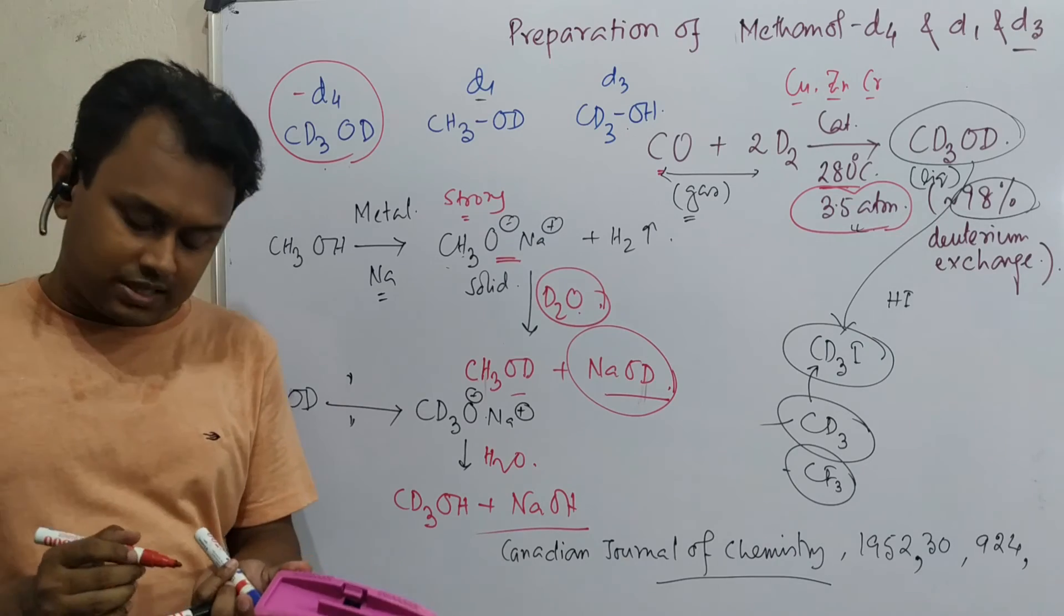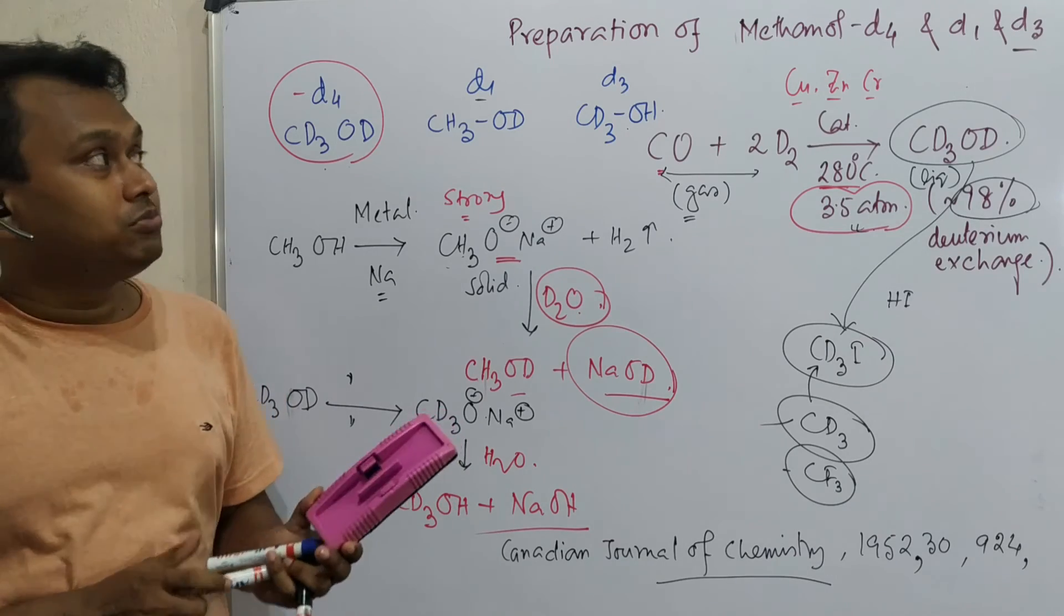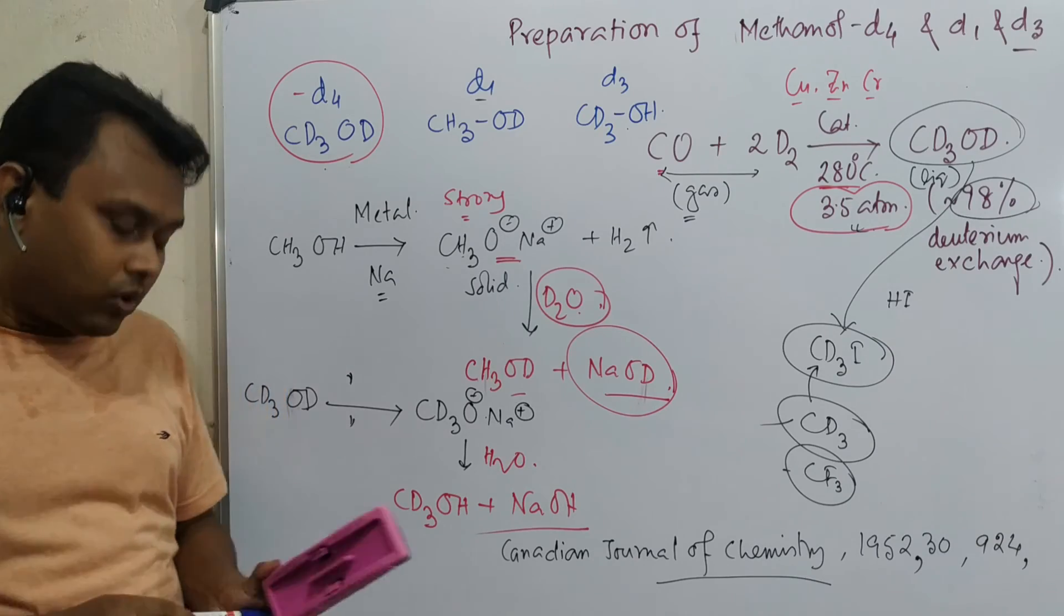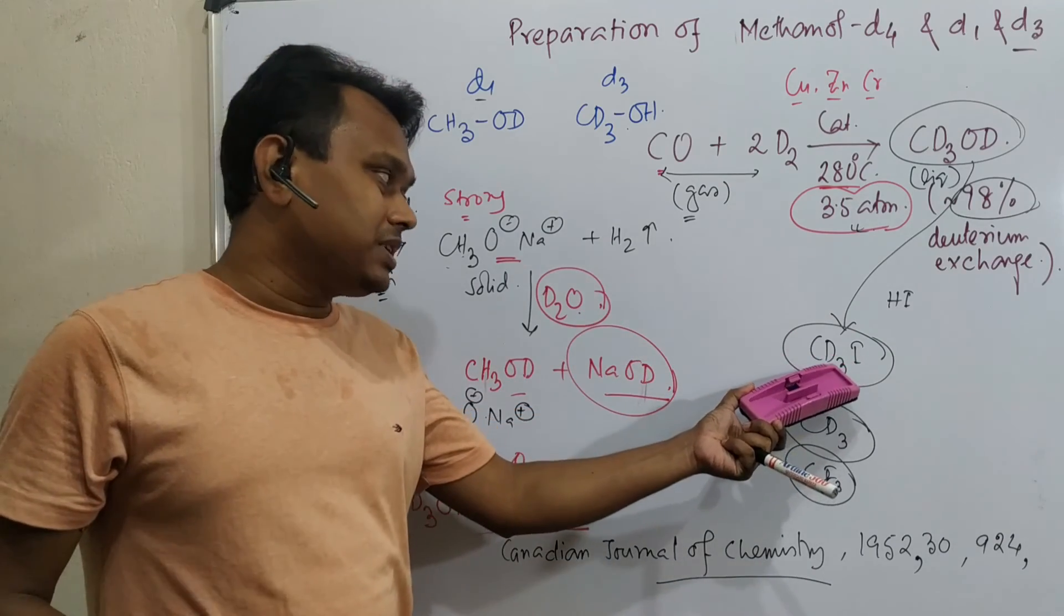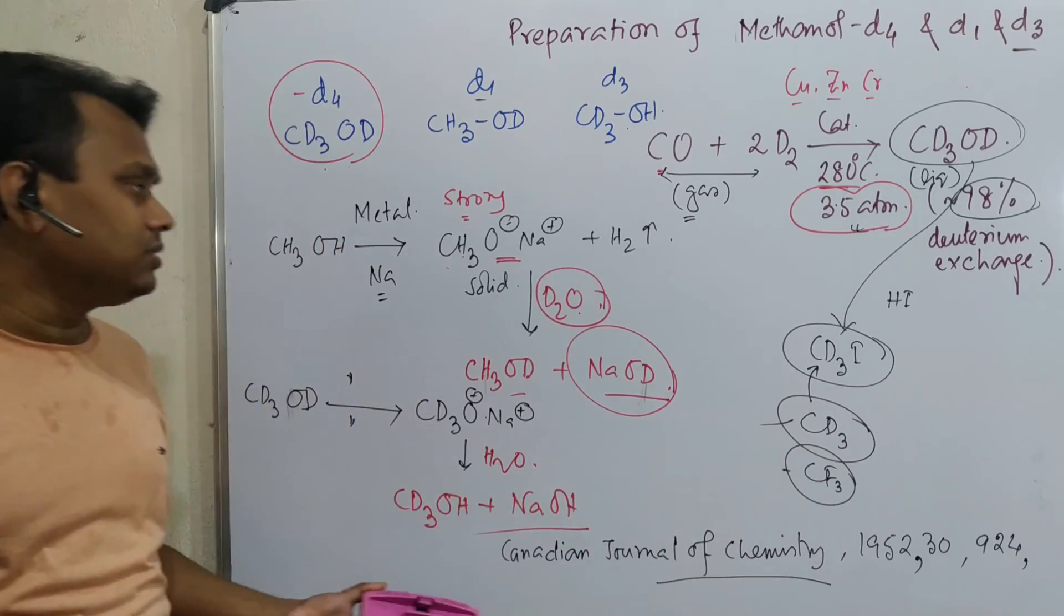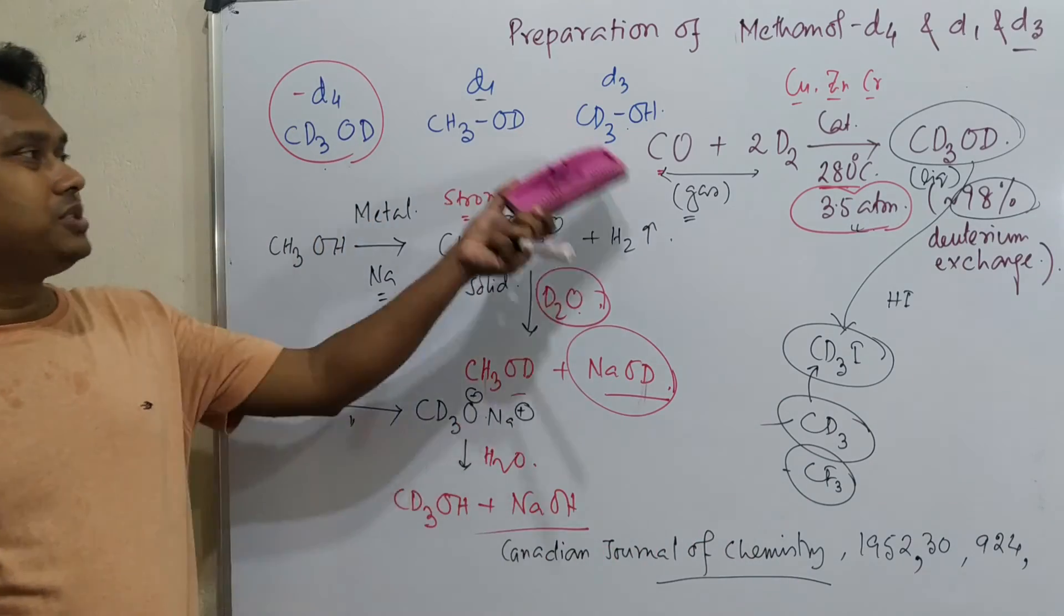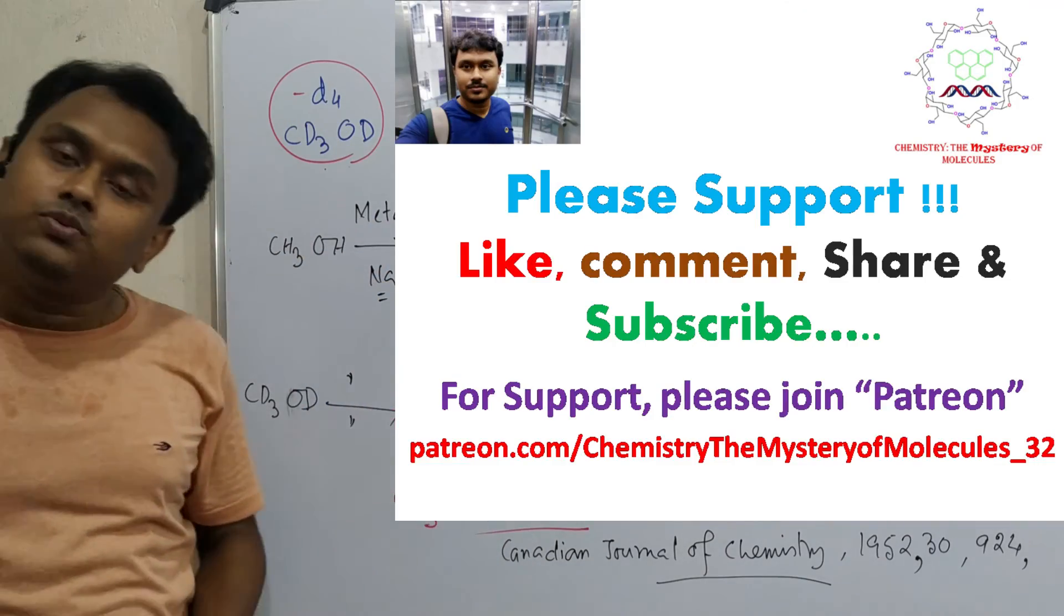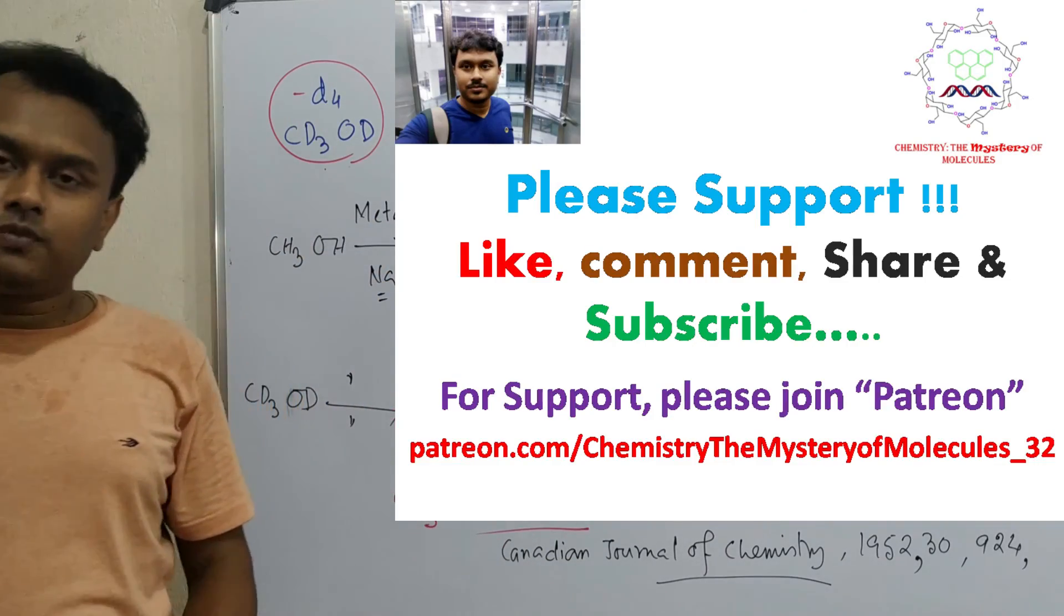So this is the overall discussion for preparation of methanol D4, D1, D3, because they are used in NMR solvent. And not only that, it's a strategy to prepare this CD3 group, which also used in medicine. So we'll discuss in some other video. This is the overall discussion, how we can prepare this methanol D4 from syngas and second methanol D1 and D3. So thank you everyone for watching.